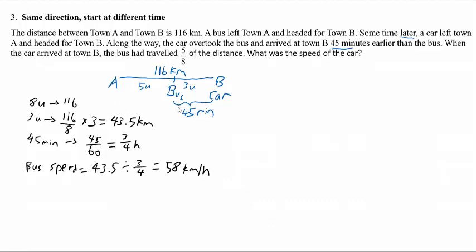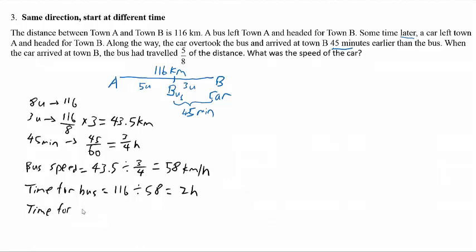To find the car's travel time, we can take the time for the bus and then minus 45 minutes, because the car took 45 minutes shorter than the bus. To find the time for the bus, we take the total distance 116 divided by 58, and the bus takes 2 hours. So the time for the car will be 2 hours minus 45 minutes.